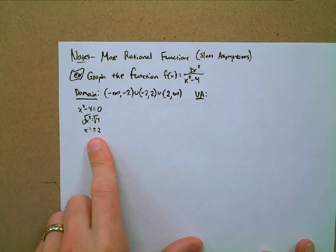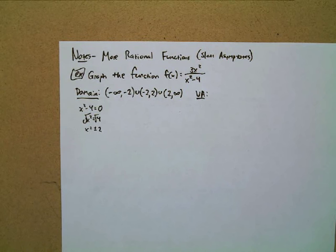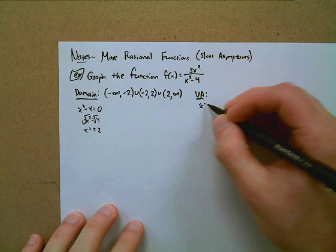If one of those values gave us zero in both the numerator and the denominator, do you remember what we call that? That's a hole — a removable discontinuity. But none of these gave us zero over zero, so both x = 2 and x = -2 are vertical asymptotes.